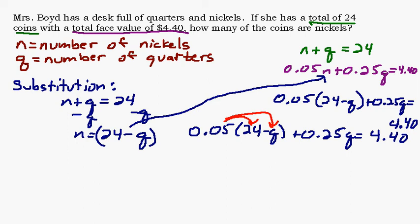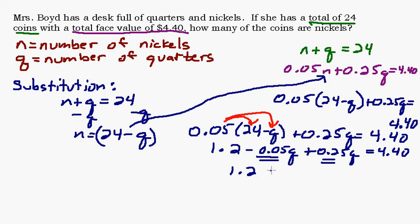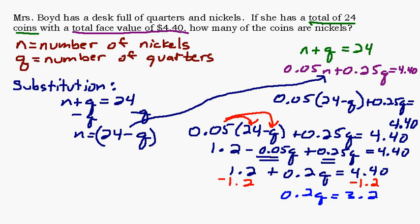So we get, if I had 24 nickels, 0.05 times 24, 20 nickels is a buck. So that'd be a buck 20. So that'd be 1.2 minus 0.05q plus 0.25q equals 4.40. Now I'll combine my q's together, which gives me 1.2 plus 0.2q equals 4.40. And then I'll subtract 1.2 from both sides, which gives me 0.2q equals 3.20. Divide both sides by 0.2. And I think we're going to get 16.